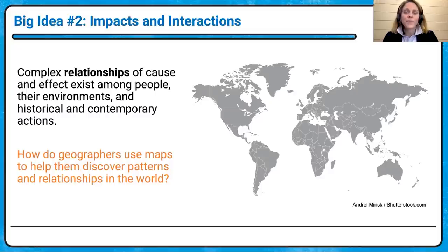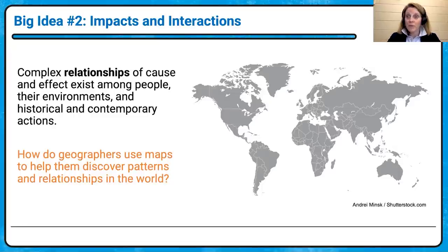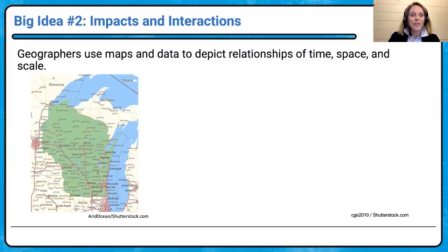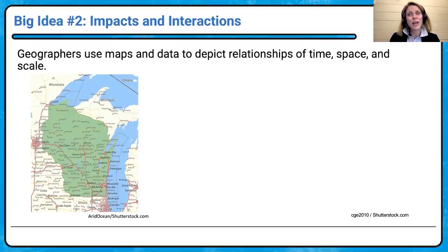Now we're transitioning to big idea number two. Once we've identified that pattern, we want to look at the relationship of cause and effect. How do geographers use maps and patterns to discover patterns of the world around them? First we need to look at our tools. One of our first tools is looking at a reference map — taking a look at where, how to get someplace, looking at different toponyms, and the imprint of who has been there. Growing up in Wisconsin, along the Mississippi River you find St. Croix, La Crosse — toponyms reflecting early French settlement.